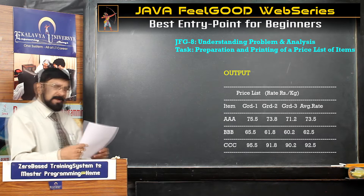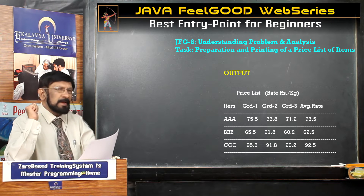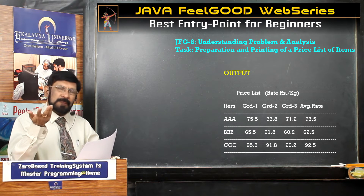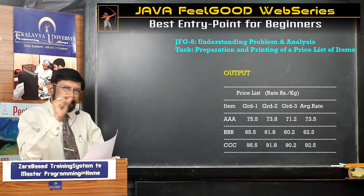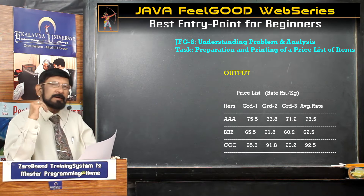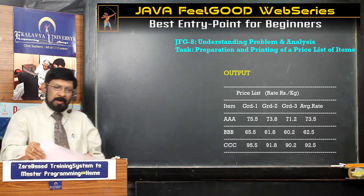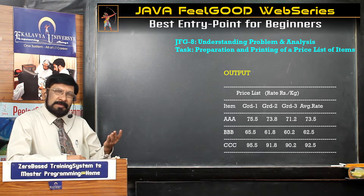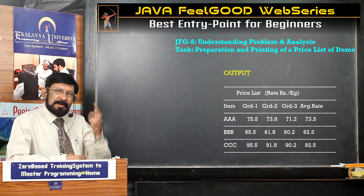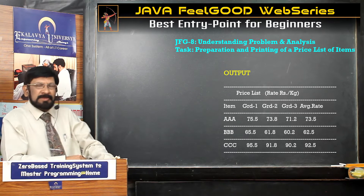Now let us come to the program. Here, one difference is there — don't treat it like a table with three items, treat it like a table with one item. Each row you treat as one object: Triple A is one object, Triple B is second object, Triple C is third object. So you prepare a blueprint for one item only. In one item, how many variables are required? One is the name of the item; second is rate of grade 1; third is rate of grade 2; fourth is rate of grade 3. So four instance variables are required, and you have to find out the average rate.